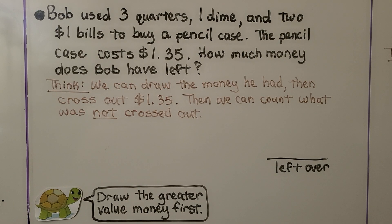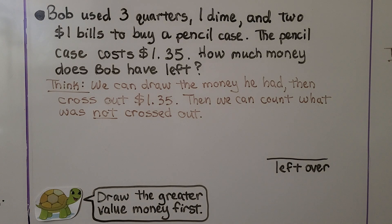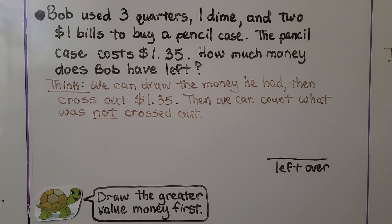Bob used three quarters, one dime, and two $1 bills to buy a pencil case. The pencil case costs $1.35. How much money does Bob have left? We think we can draw the money he had, then cross out $1.35, then count what was not crossed out to know what he had left over.